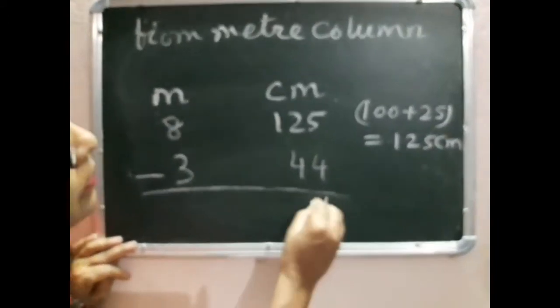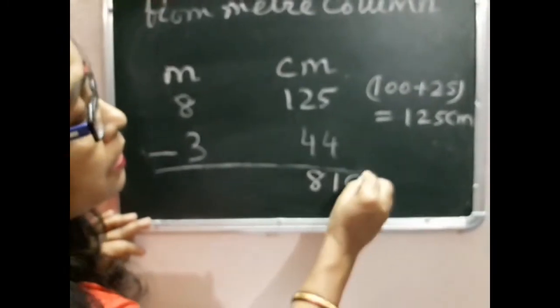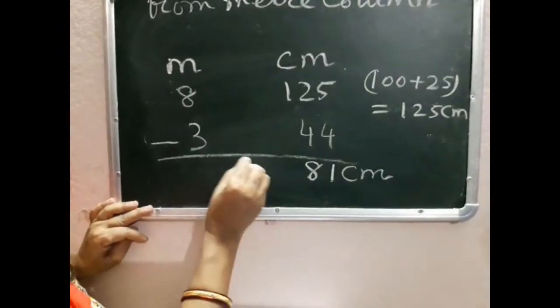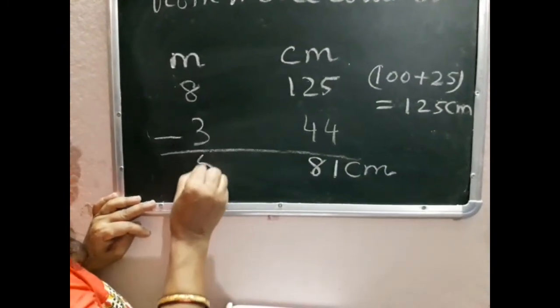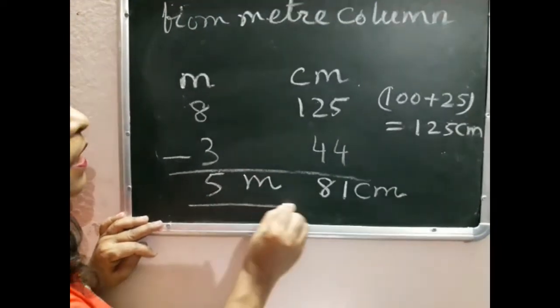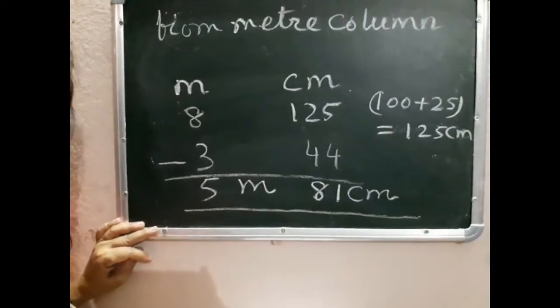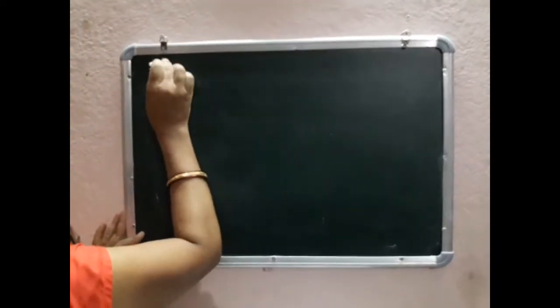125 minus 44 equals 81 centimeters, and 8 minus 3 equals 5 meters. This is the answer: 5 meters 81 centimeters.